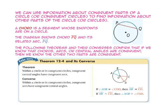So, if we know that arc AB is congruent to arc CD, then we know that angle AOB is also congruent to angle COD.